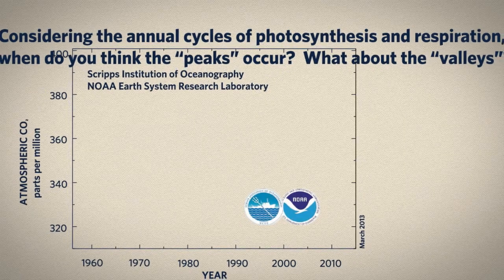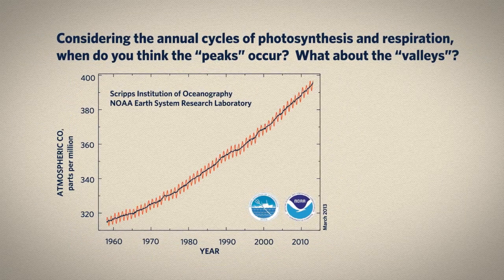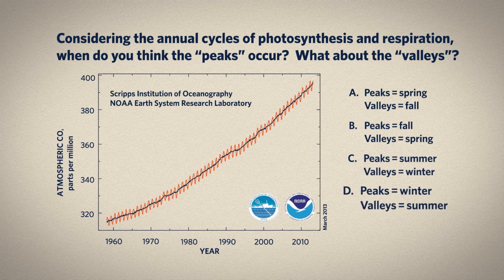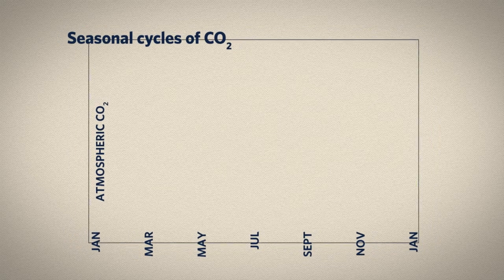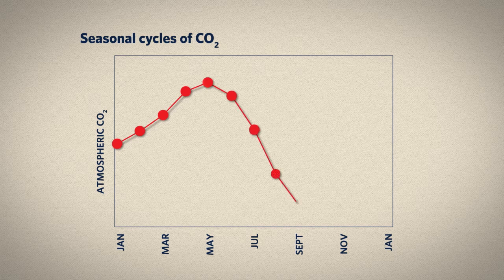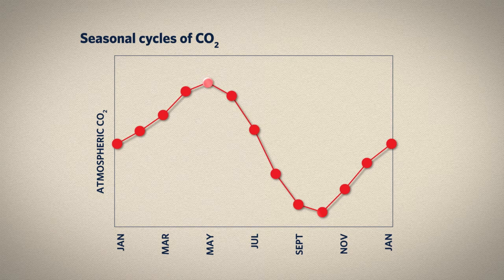Now we're going to work in a little more detail with stock and flow. Here's the atmospheric CO2 data from Mauna Loa again, showing the upward trend, but more important for us here, the seasonal wiggles that happen. In which season do the little peaks occur? When do the little valleys occur? These are data from the northern hemisphere, so consider seasons in the northern hemisphere. The peak turns out to be in May, which is springtime in the northern hemisphere, and the valley turns out to be in October, which is autumn in the northern hemisphere.